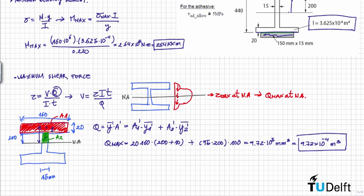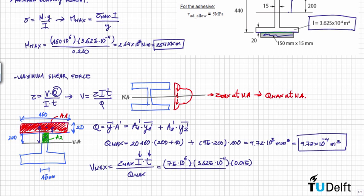V_max is equal to tau_max times the moment of inertia times the thickness divided by Q_max. We already know the moment of inertia, and the thickness at the neutral axis is equal to 15 millimeters. This gives the maximum shear force for the unreinforced beam, and the maximum bending moment for the unreinforced beam.